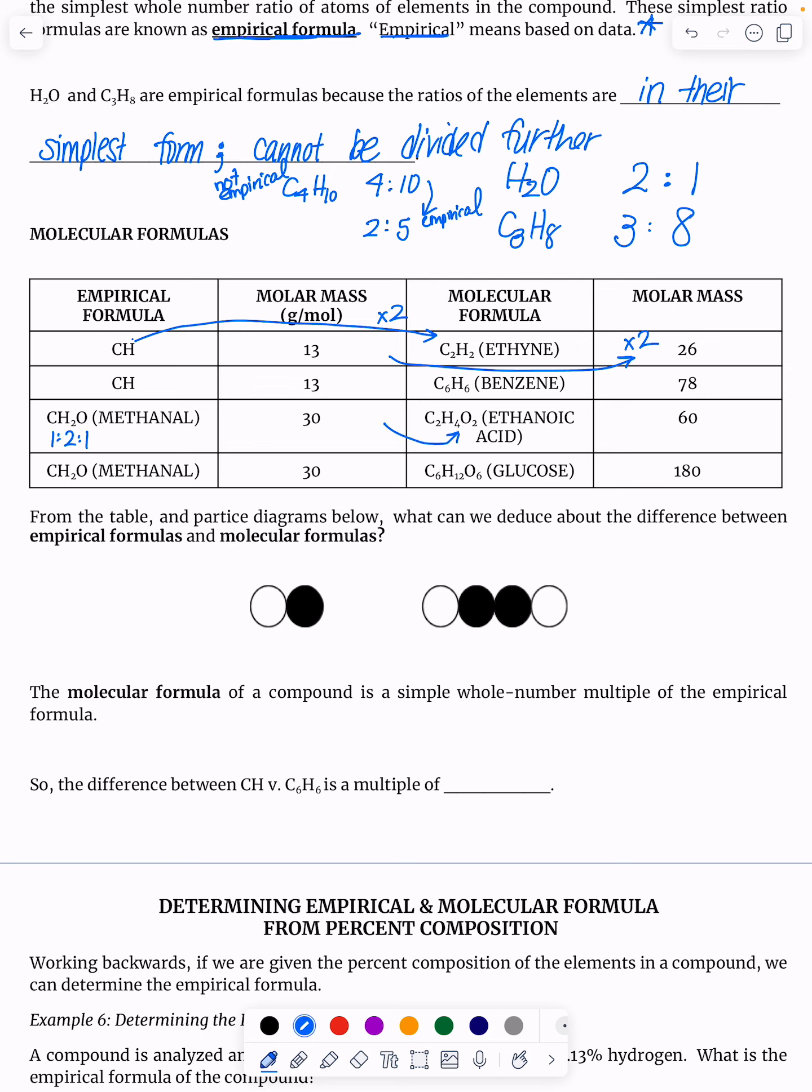If I multiply that by two, I get ethanoic acid, a molecular formula. And look, its molar mass is also multiplied by two.